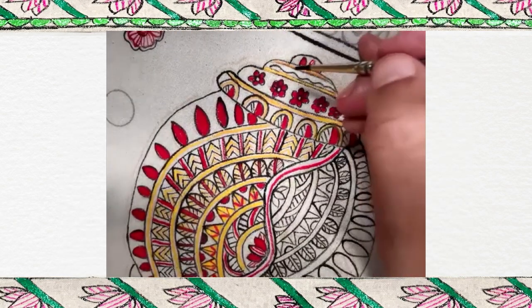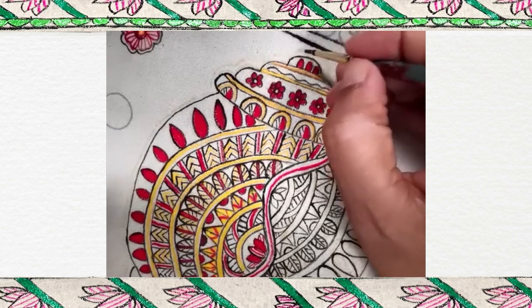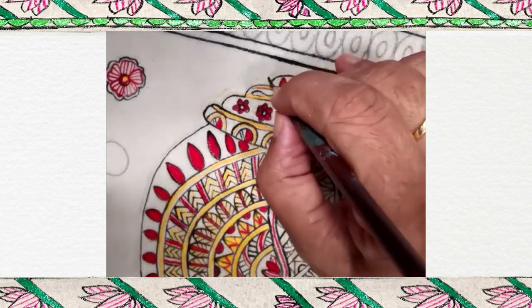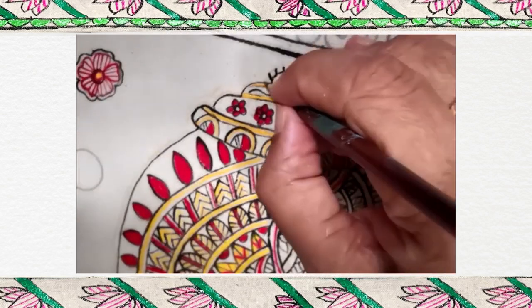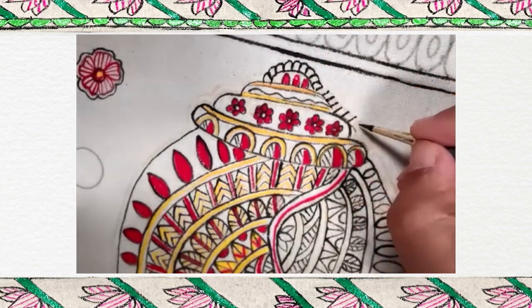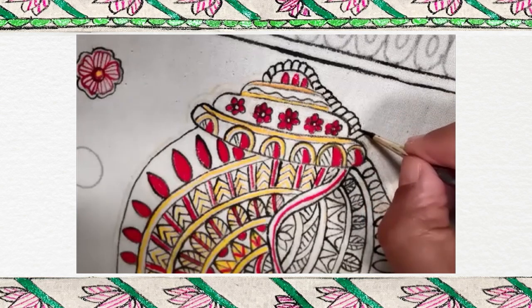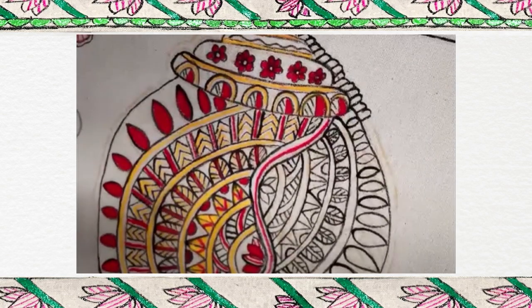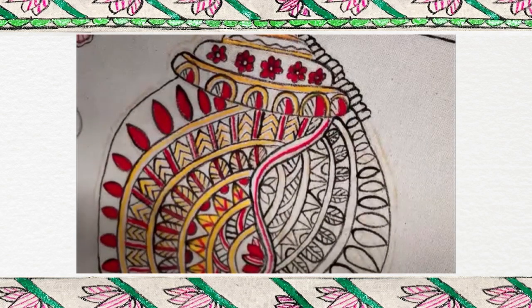Outer one, we have to give double line. Instead of giving double line, what I am doing, please see carefully. This kind of design all over. Now, I will show you how to fill the colors in this.